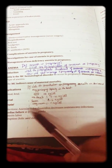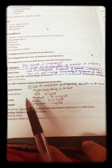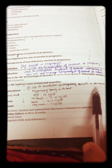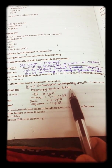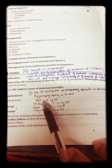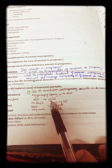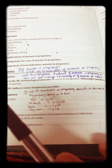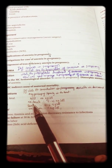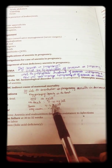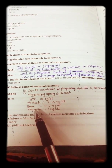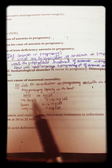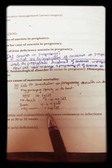Anemia complicating pregnancy: the definition of anemia is low hemoglobin concentration resulting in decreased oxygen carrying capacity in the blood. As per WHO, hemoglobin less than 11 grams per deciliter is considered anemia during pregnancy. Moderate anemia ranges from 7 to 10.9 grams per deciliter, severe anemia 4 to 6.9 grams per deciliter, and very severe anemia less than 4 grams per deciliter.